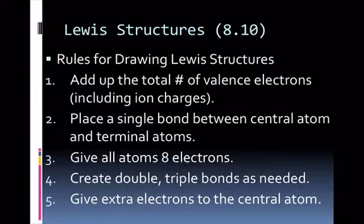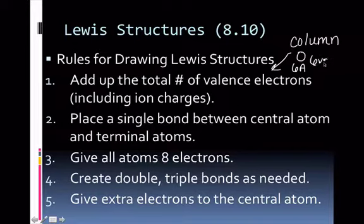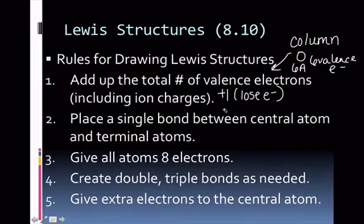Rules for drawing Lewis structures: First, go to the periodic table and add up the total number of valence electrons — include ion charges. You look at the column heading; for example, oxygen is in column 6A so it has six valence electrons, hydrogen is in 1A so it has one, nitrogen is in 5A so it has five. If an ion has a charge of plus 1, you lose an electron. If it has a charge of negative 2, you gained electrons. Subtract electrons from your total for a positive charge.